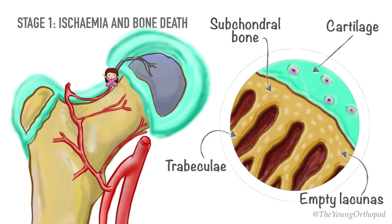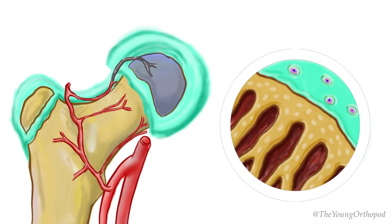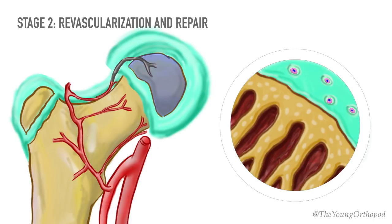As time passes — within weeks or possibly even days of infarction — a number of changes begin to appear. The dead marrow is replaced by granulation tissue. New capillaries grow in and the bone is revascularized. Osteoblasts produce new lamellae on the dead trabeculae, producing the appearance of increased density on the x-rays.